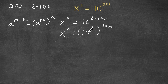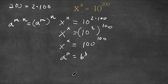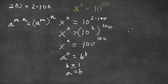Now 10 squared is simply 100, so now we have x to the power of x is equal to 100 to the power of 100. And if we have something in the form a to the power of a is equal to b to the power of b, as long as b is greater than or equal to 1, then a is equal to b. In this case b is 100, which is much greater than 1, so this means that x is equal to 100.